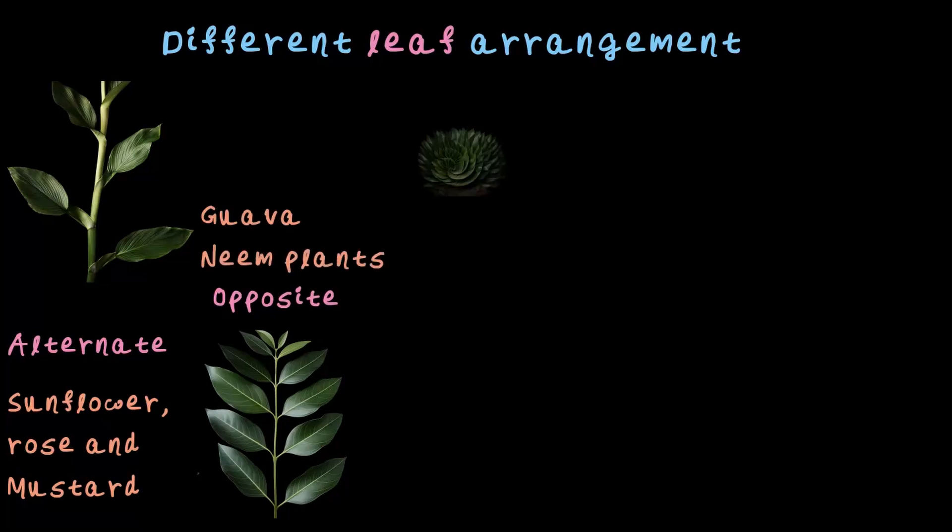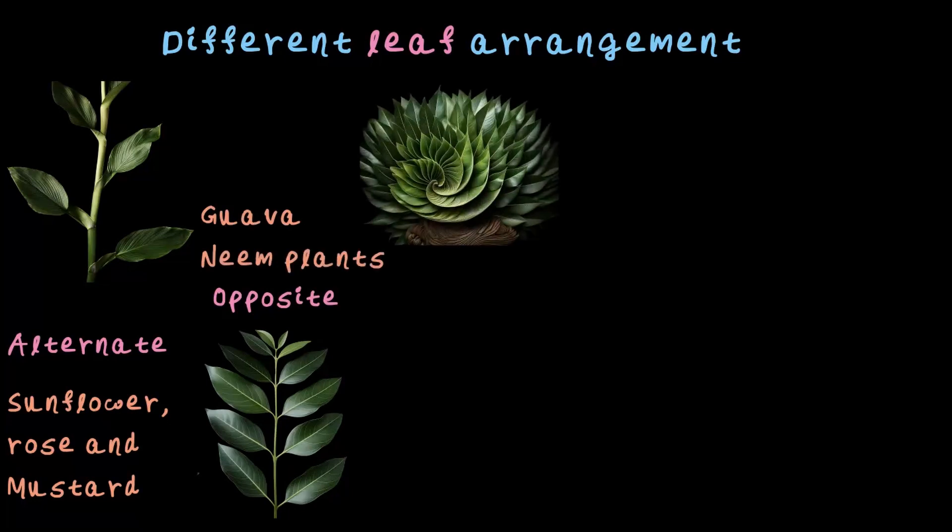Next up, we have a unique plant. This is called a spiral pattern arrangement where the leaves when growing on the stem forms this type of pattern which is spiral pattern. It's seen in some species, some type of aloe vera plant.